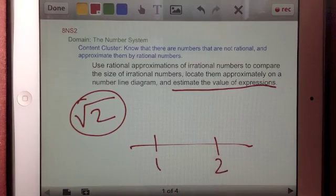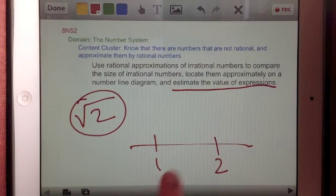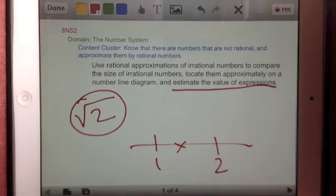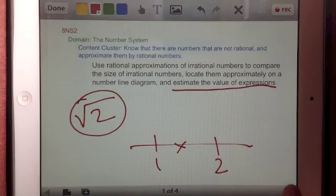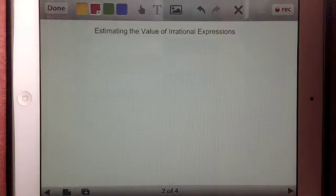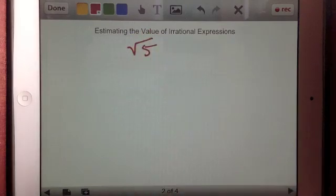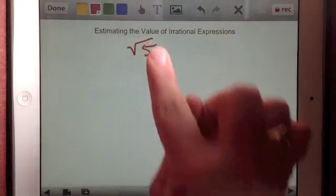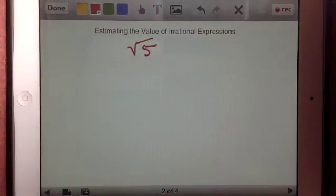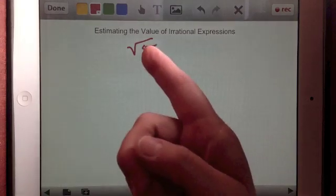Would it be closer to 2 or closer to 1? Then where approximately along this line would you place that value? So let's take a look at square root of 5, just to get started. 5 again is a prime number, and we take the square root of a prime number, you end up with an irrational expression because there isn't an integer that you can multiply by itself to accurately get 5.